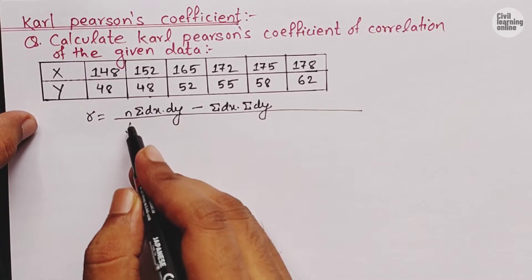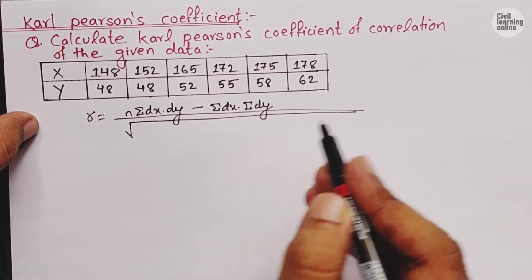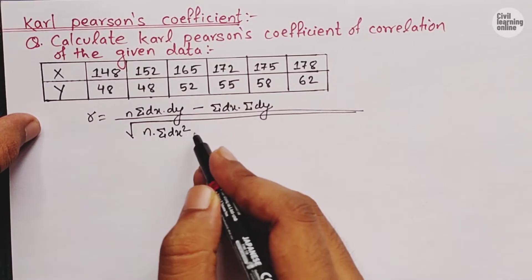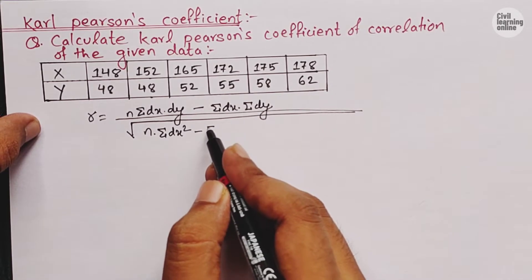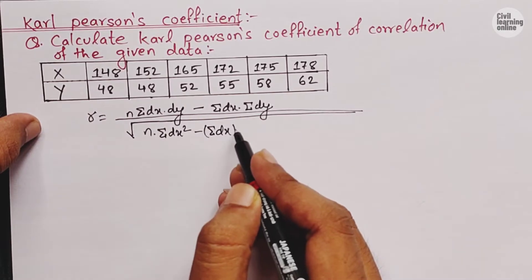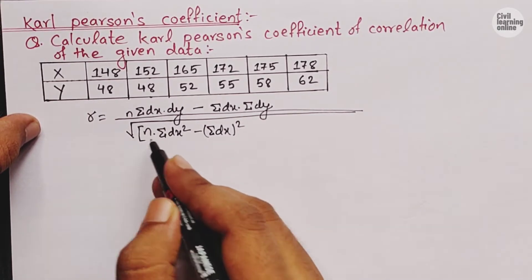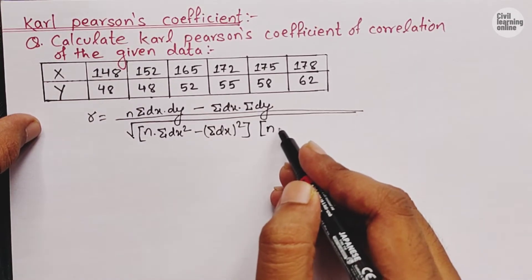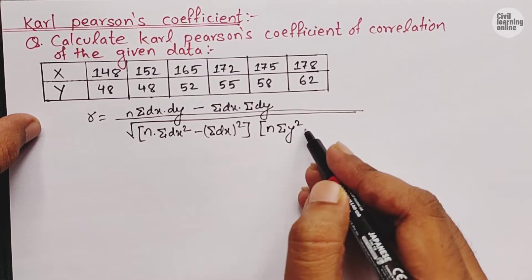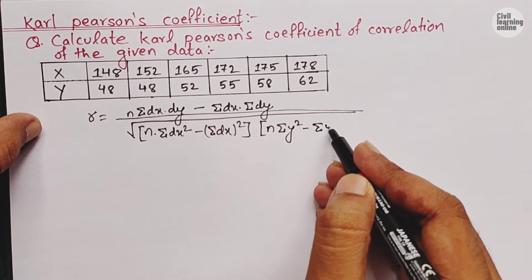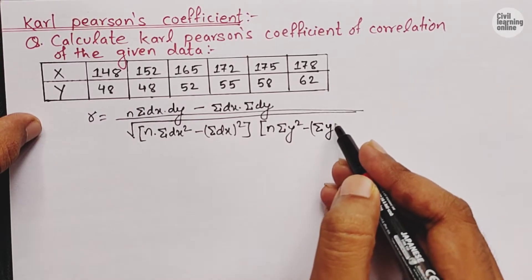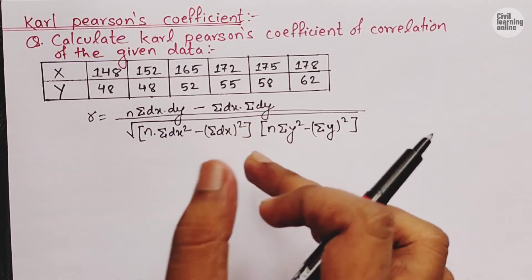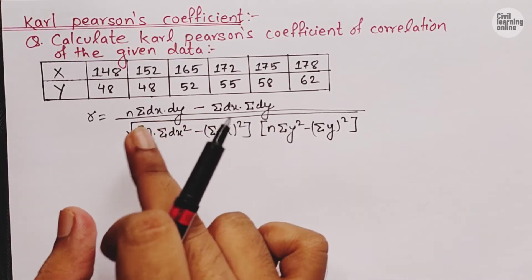The denominator is: root under n times summation dx squared, minus summation dx whole squared — then multiplied by n times summation dy squared, minus summation dy whole squared. We need to find the value of each and every variable in this formula, so for that I need to draw a table.